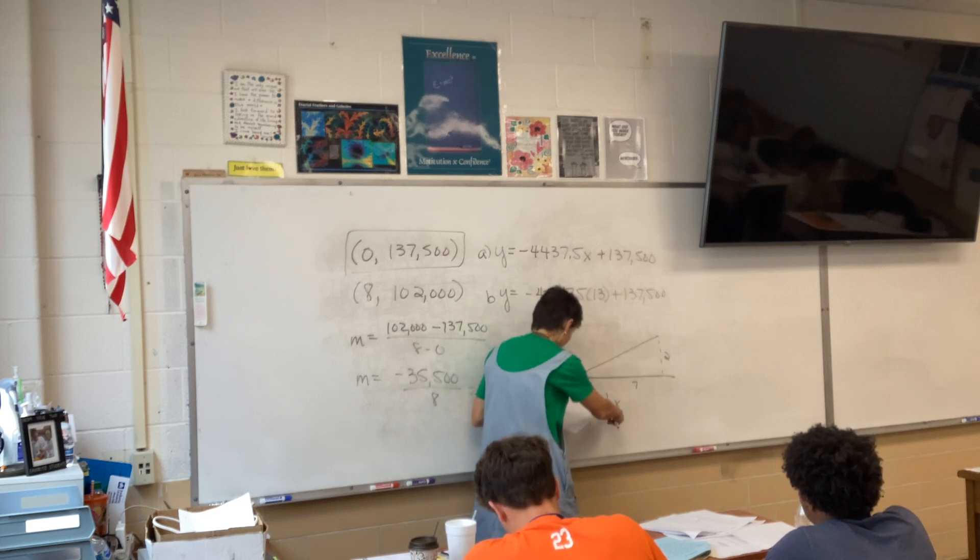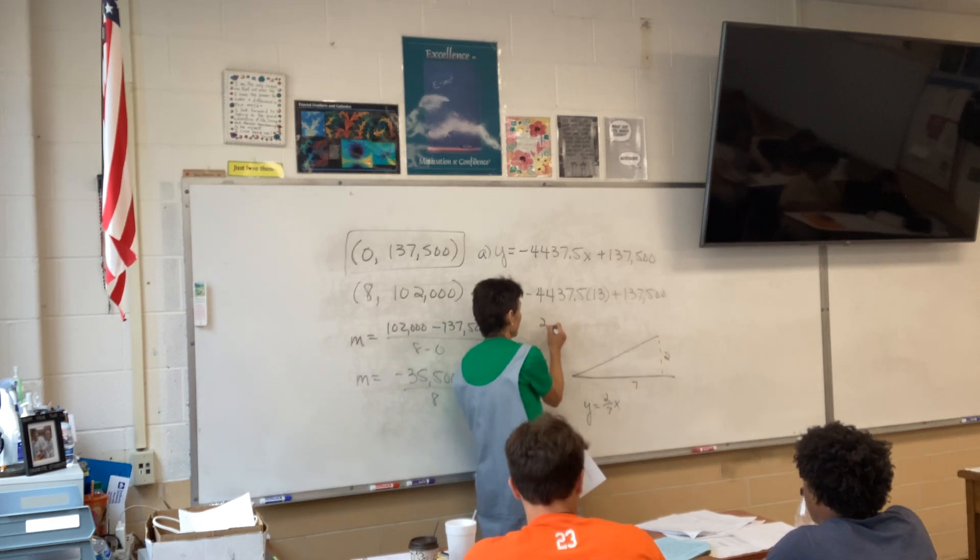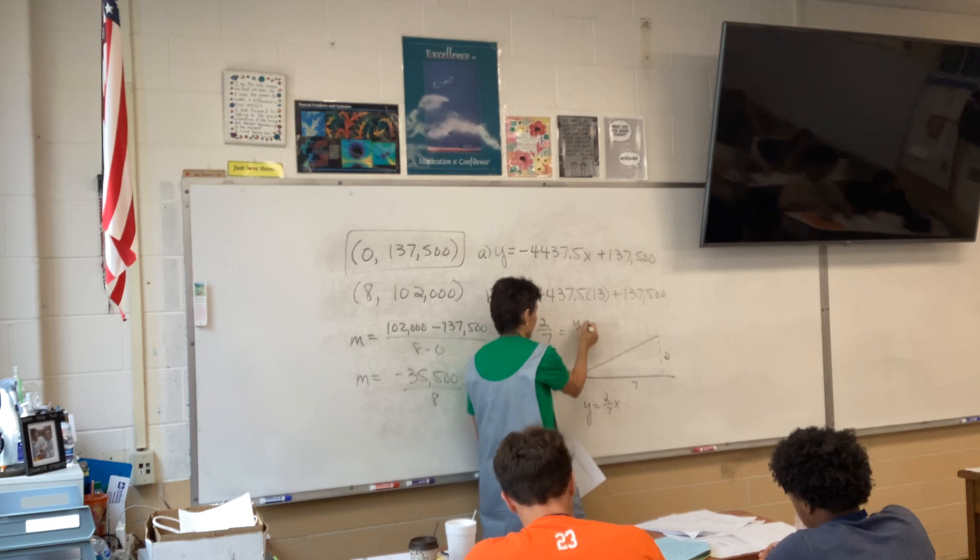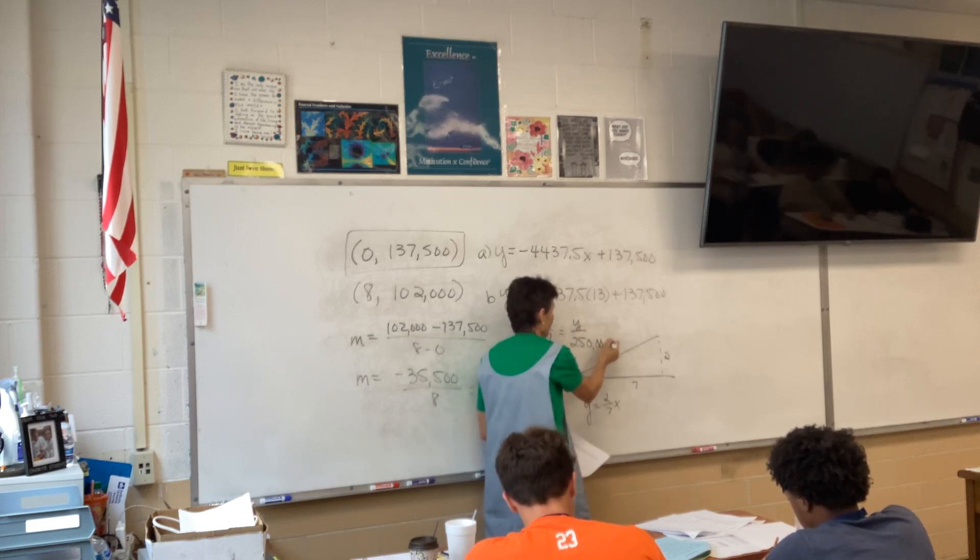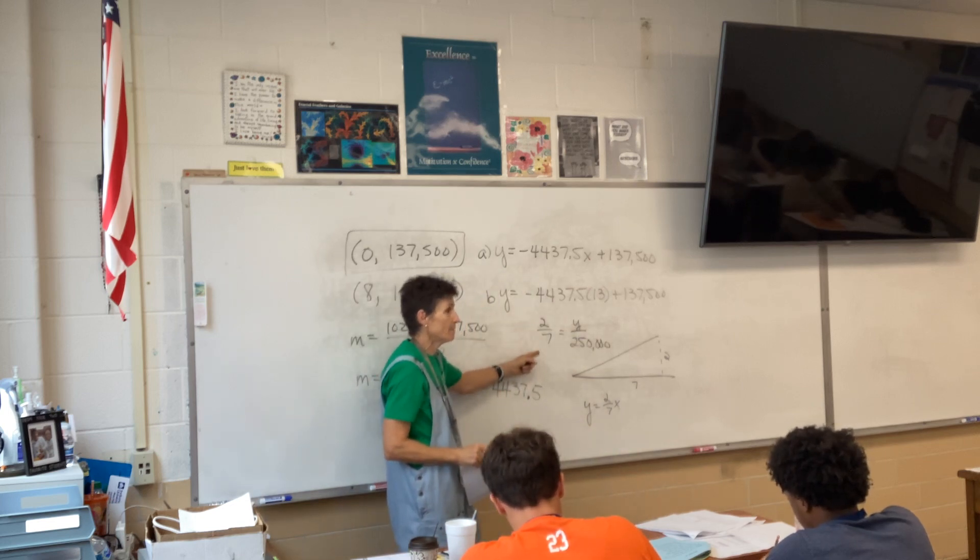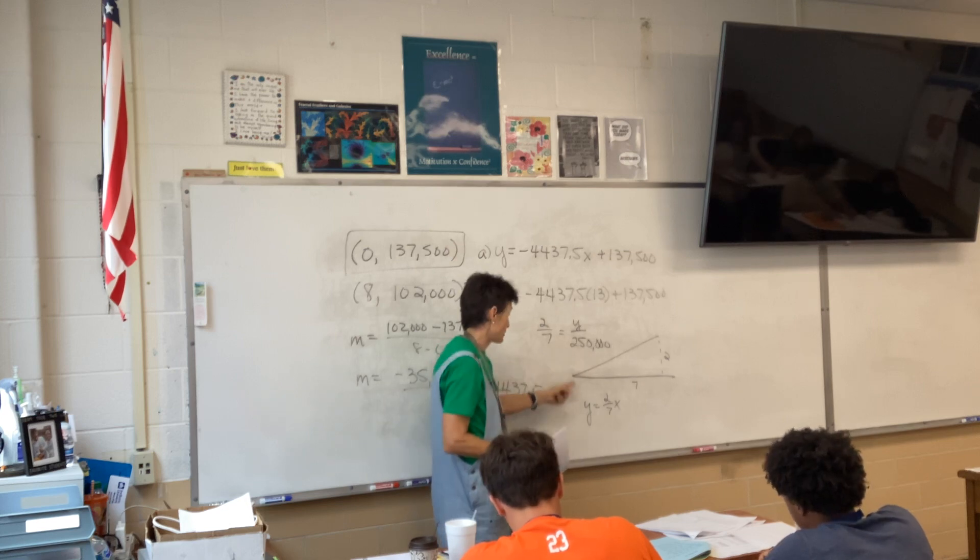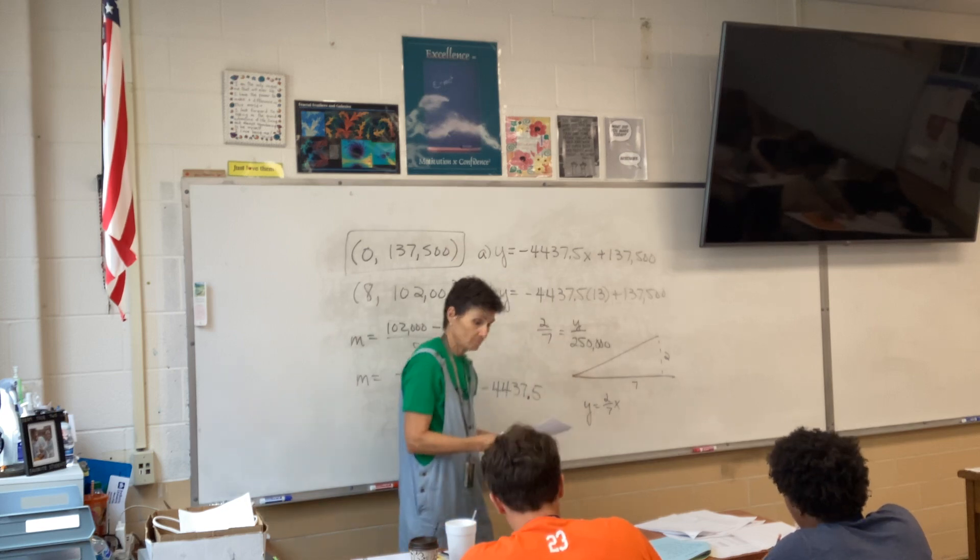That describes this line right here. If you want. You don't have to do that, but that would be an option. How high off the ground will the airplane be after it flies 250,000 feet in the horizontal direction? Well, if you've written an equation, then you would put 250,000 in for x and figure out why.